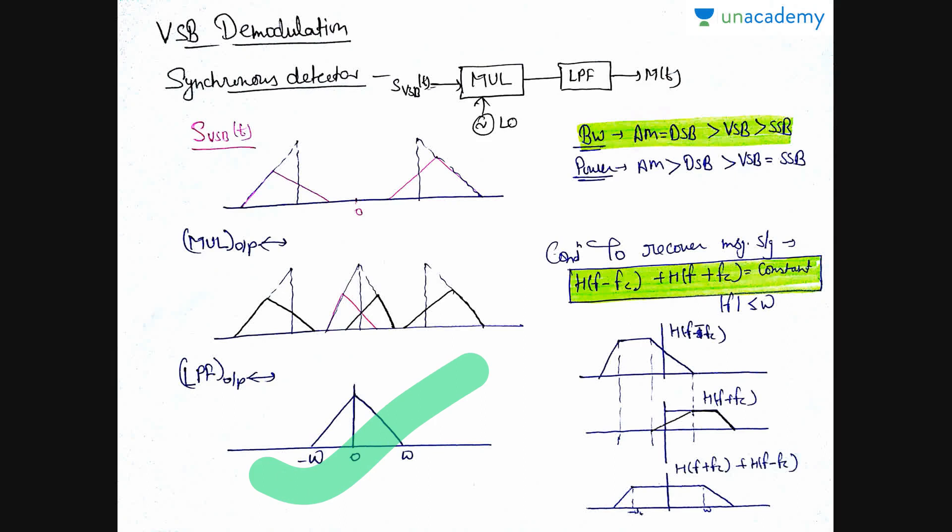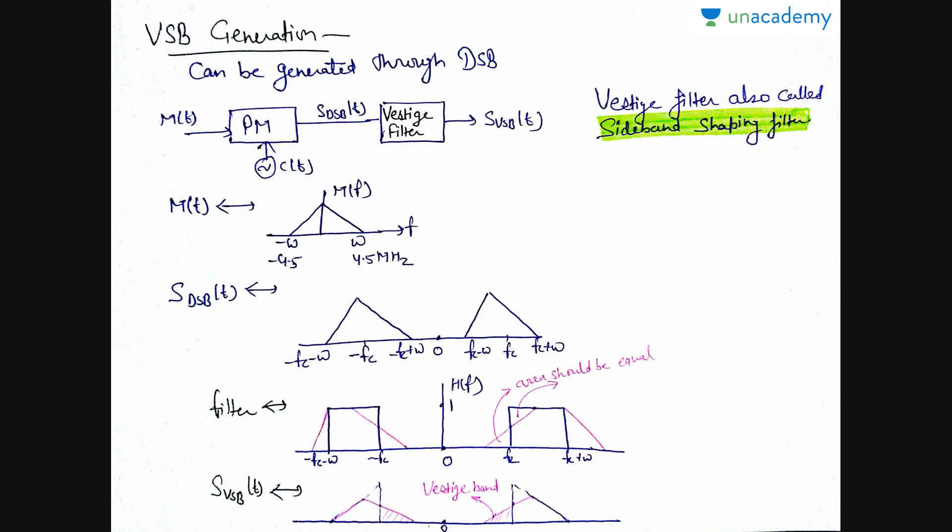And here is the condition to recover this message signal. What is that condition? Condition is that H(f - FC) plus H(f + FC) should be constant. That is, what is H(f)? H(f) is the transfer function of this filter, that is, the vestigial filter. This is our vestigial filter.